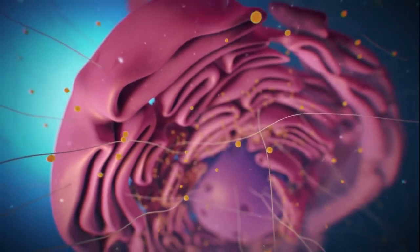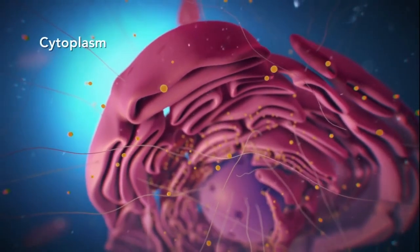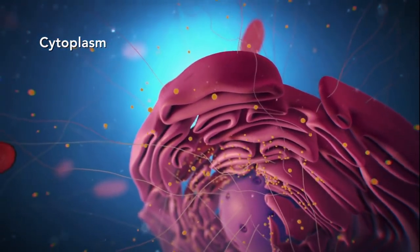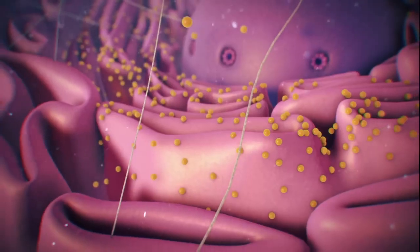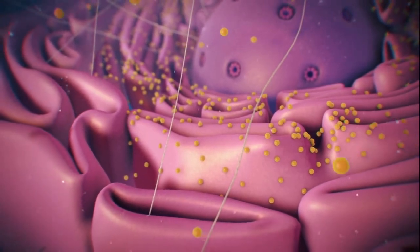Outside the nucleus, the ribosomes and the rest of the organelles float around in cytoplasm, which is the jelly-like substance. Ribosomes may wander freely within the cytoplasm or attach to the endoplasmic reticulum, sometimes abbreviated as ER.